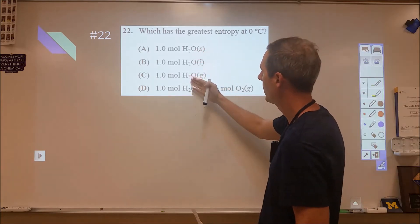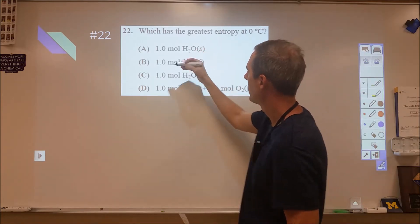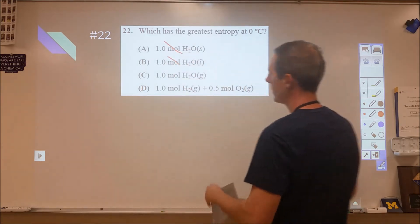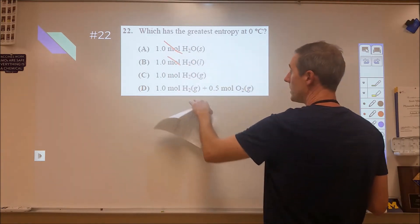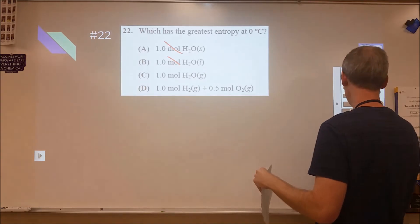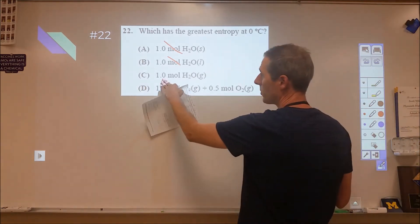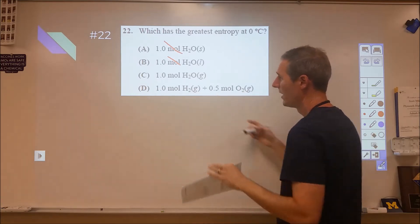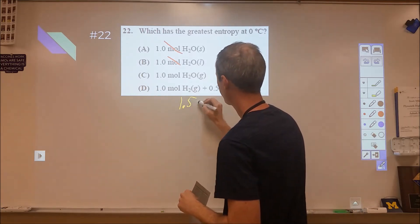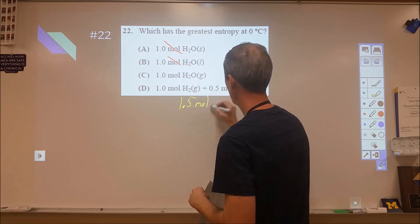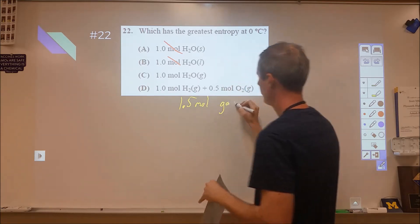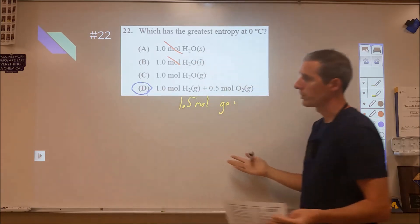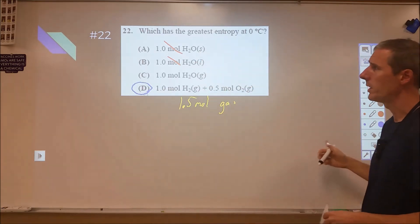In this one, we're looking at water, water, and water—solid, liquid, gas. Obviously the gas has more entropy than the solid or the liquid, so we're really going to compare C and D. C and D are pretty easy to compare because we're looking at one mole of steam versus one mole of hydrogen gas and half a mole of oxygen gas. This is 1.5 moles total of gas, and so therefore D is the simple answer here. We're looking at a greater amount of moles of gas.